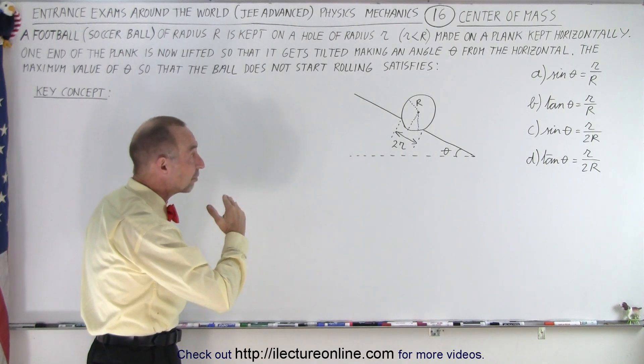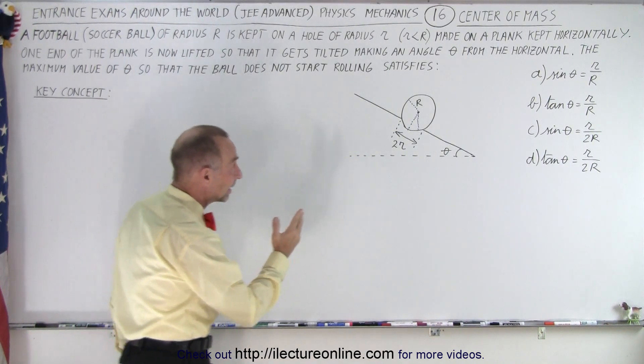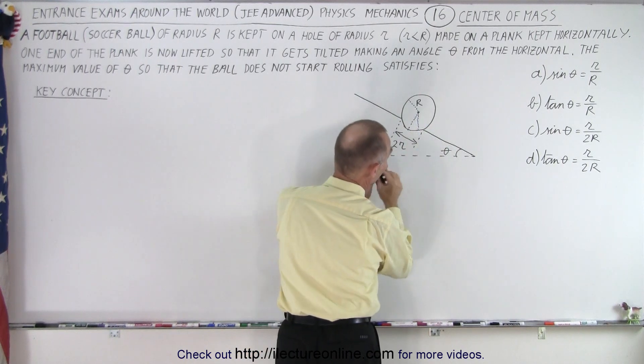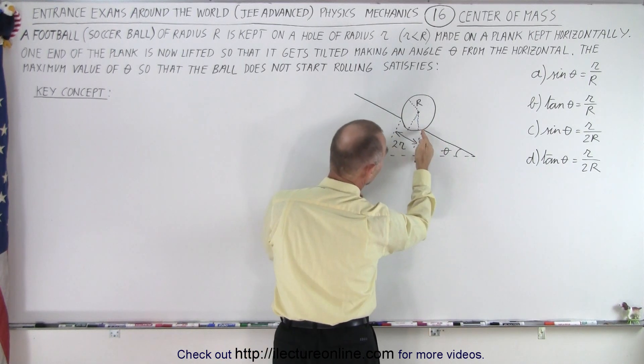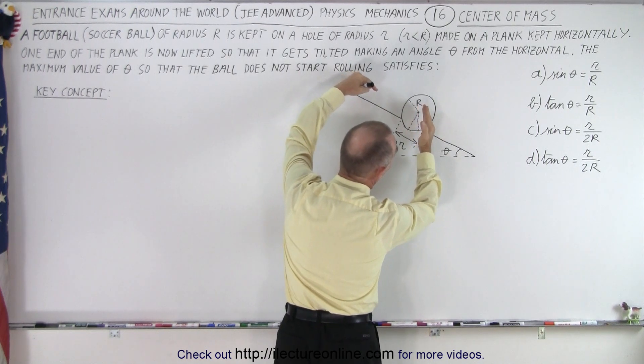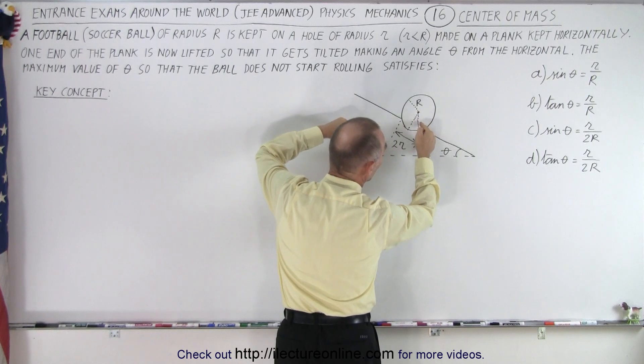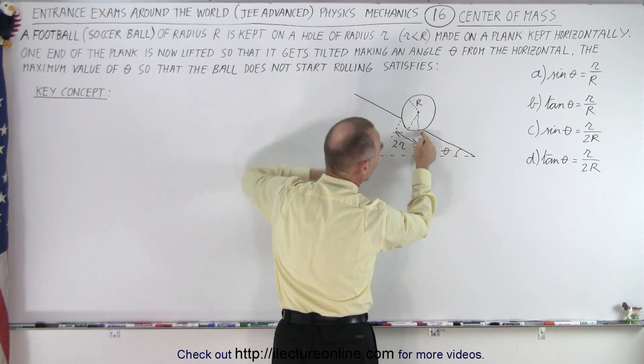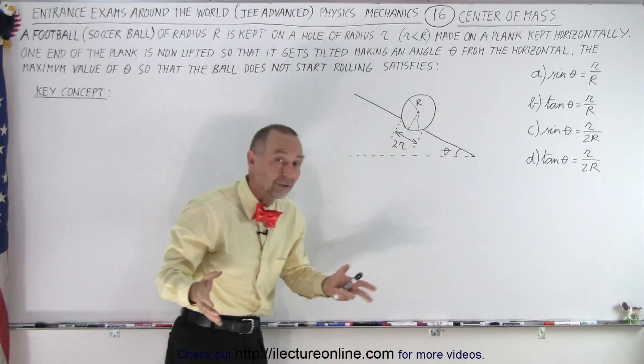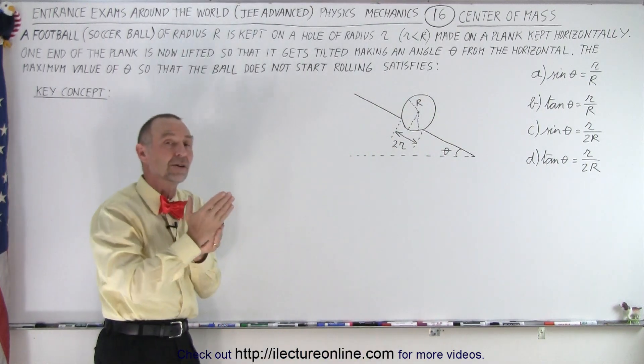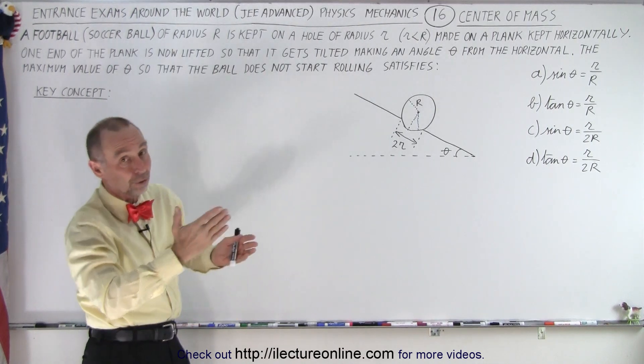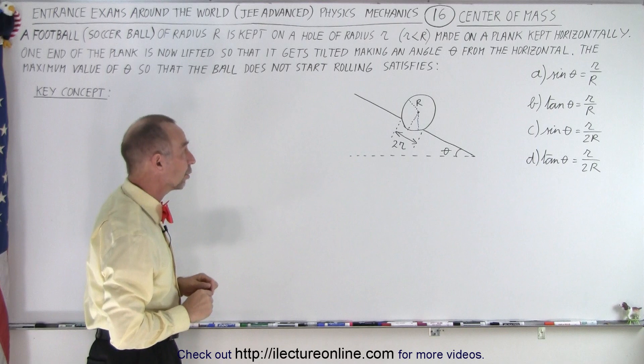Well, we should know that as the center of mass gets past the last point of support, now remember, this is the farthest point, there's a circular hole, that's the farthest point. If you make this steeper, then the center of mass will tend to go to the right, and eventually the center of mass will be right above that final point of support. If the center of mass goes past it, the ball will roll out. So essentially, the key concept here is if the center of mass gets past the last point of support, the whole thing will tip over, in this case, the ball will roll out of the hole.